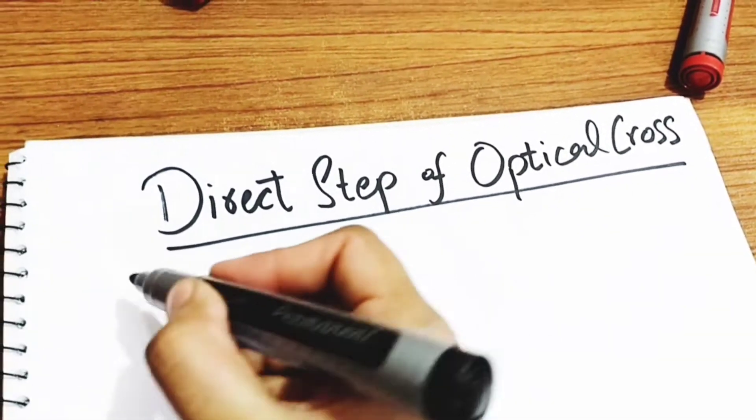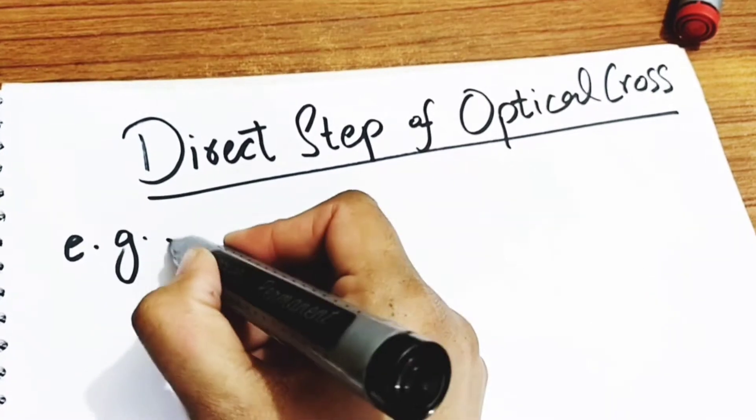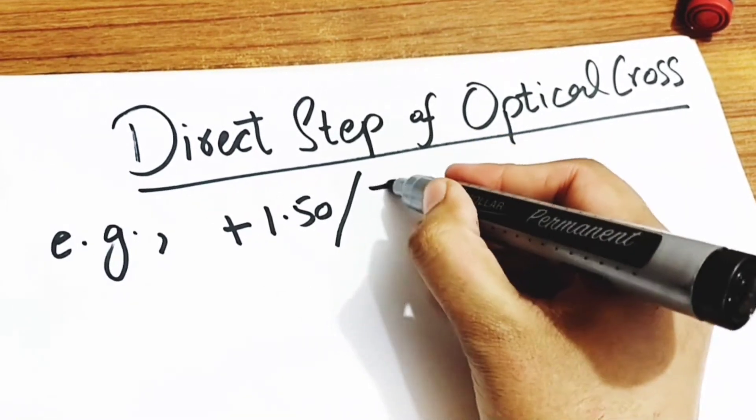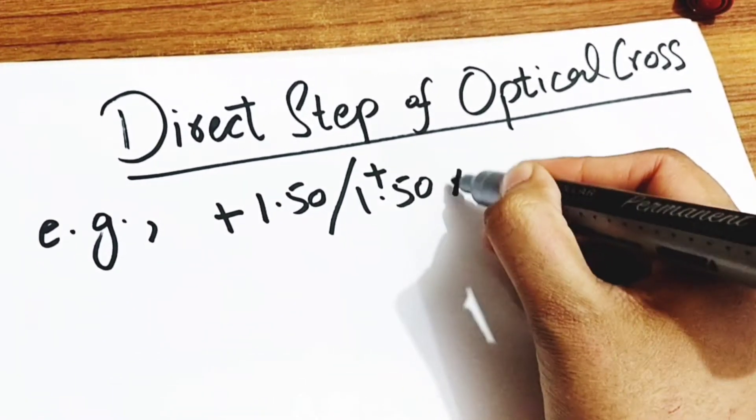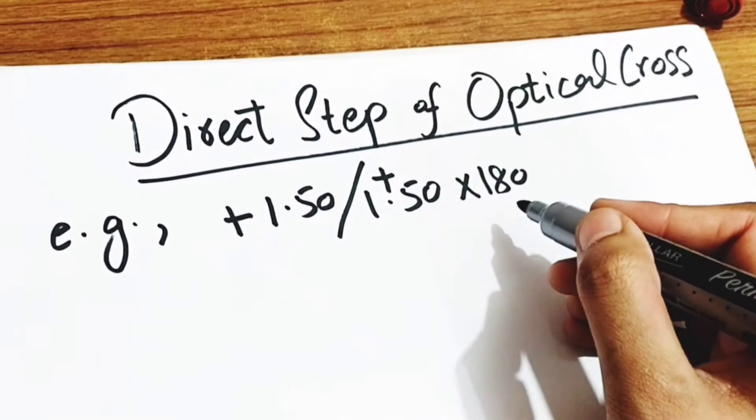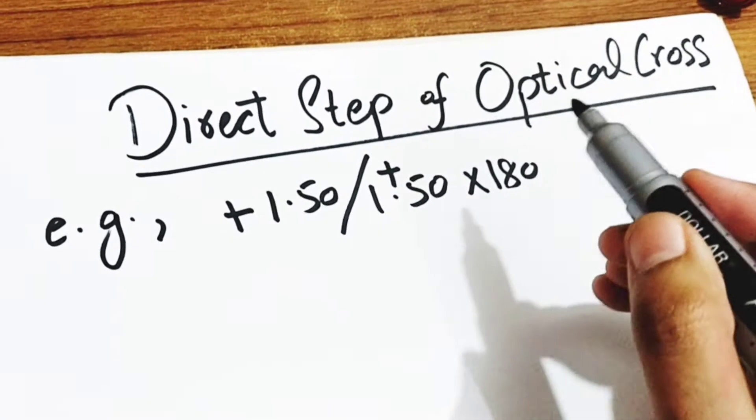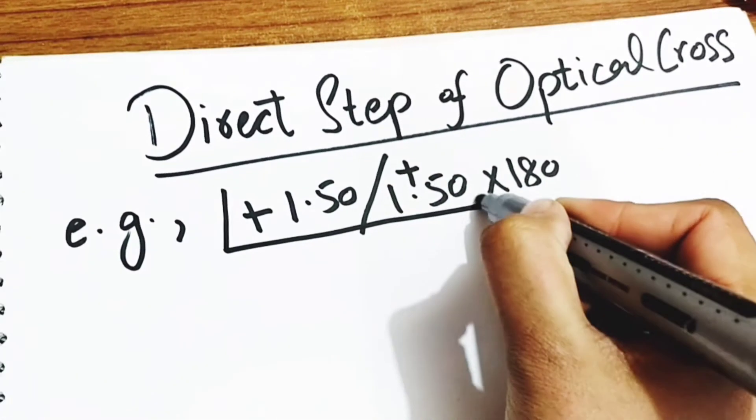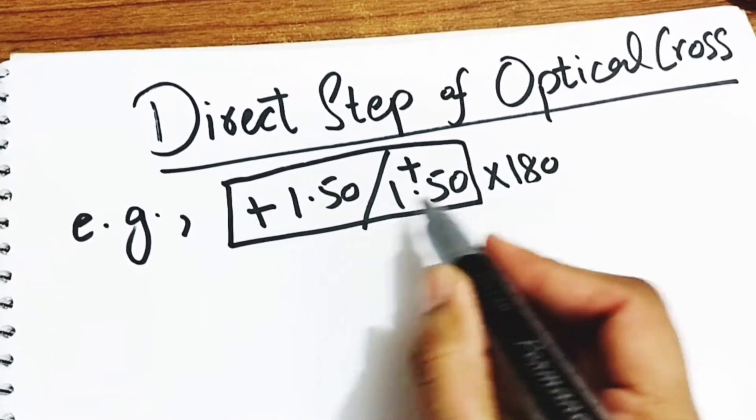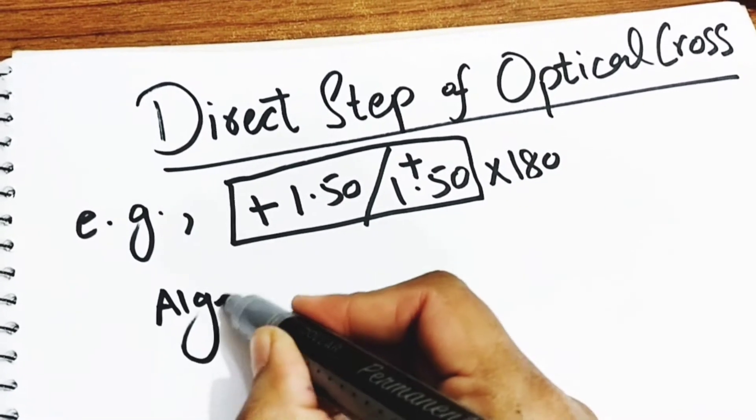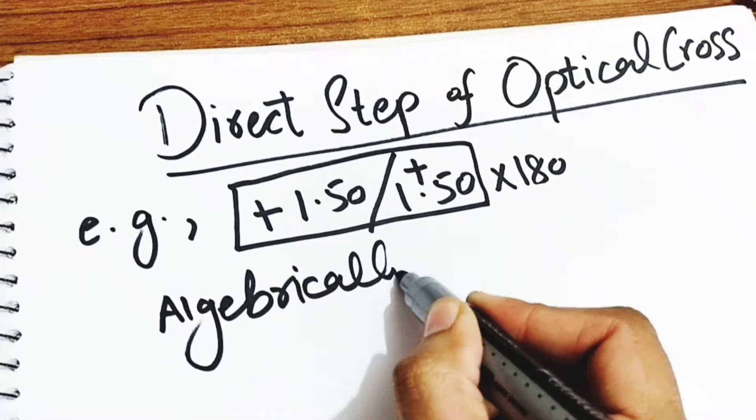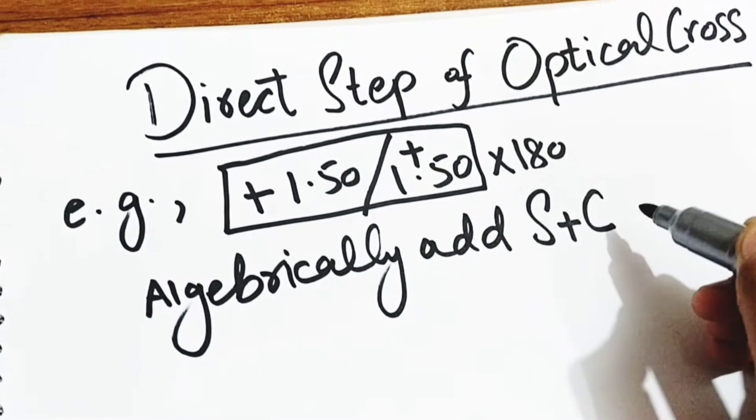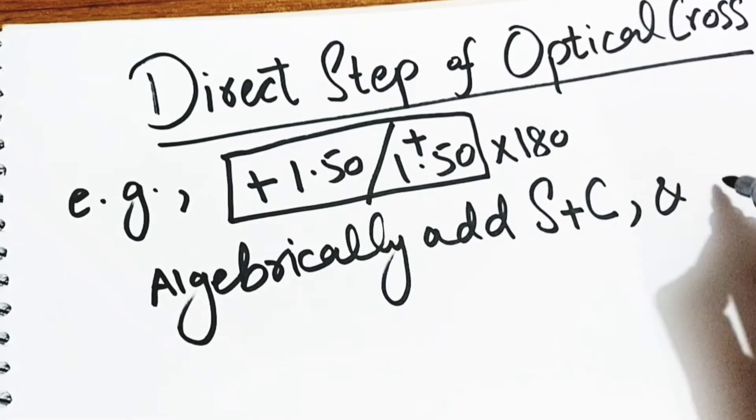Here is an example: +1.50 sphere, +1.50 cylinder, axis 180. For this, keep in mind just one line: algebraically add sphere and cylinder, and axis is of sphere.